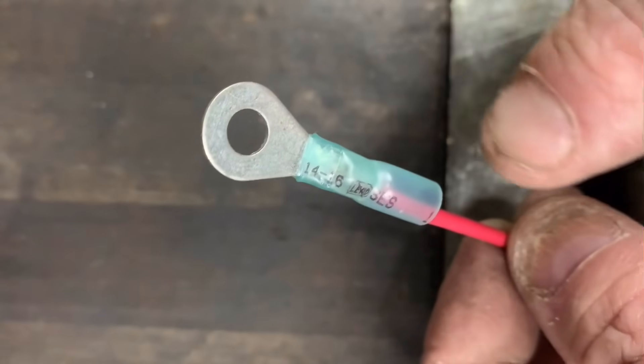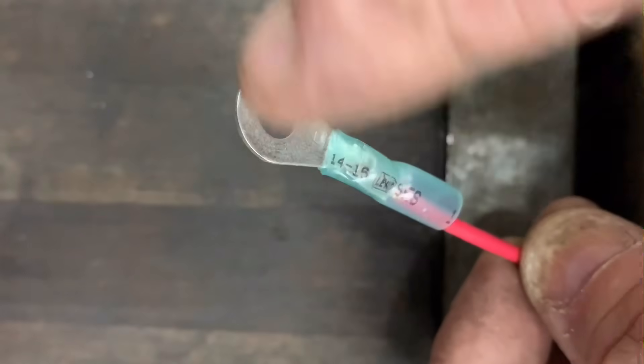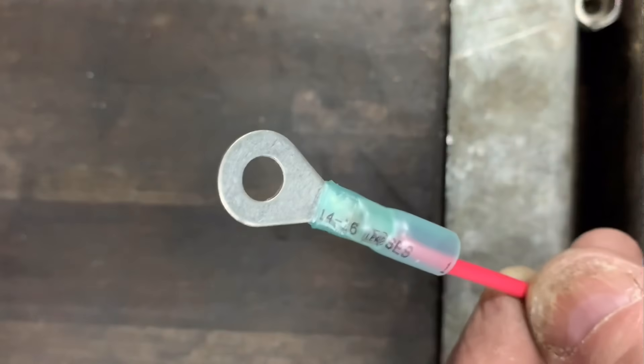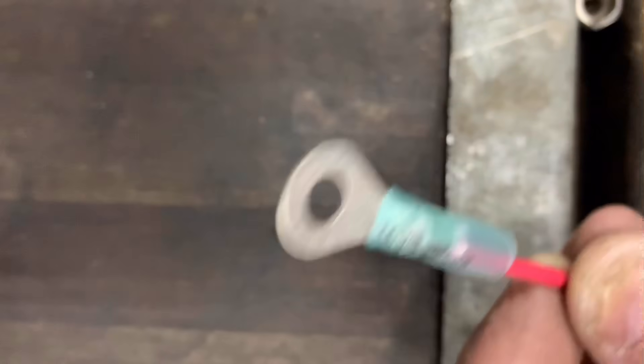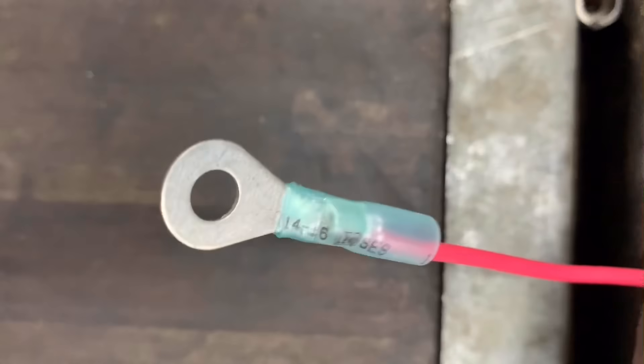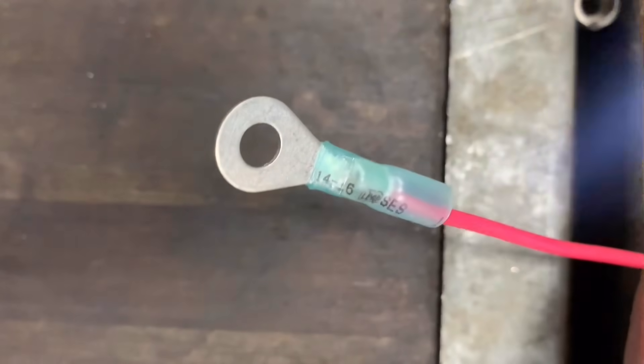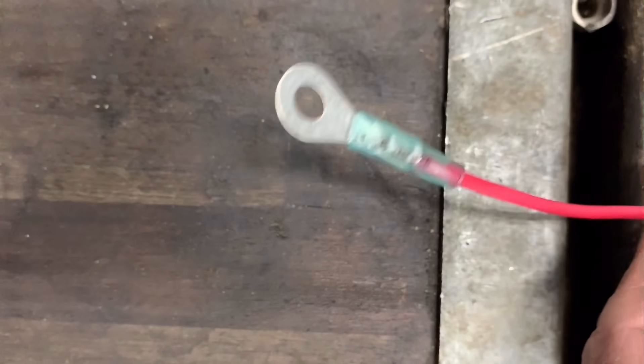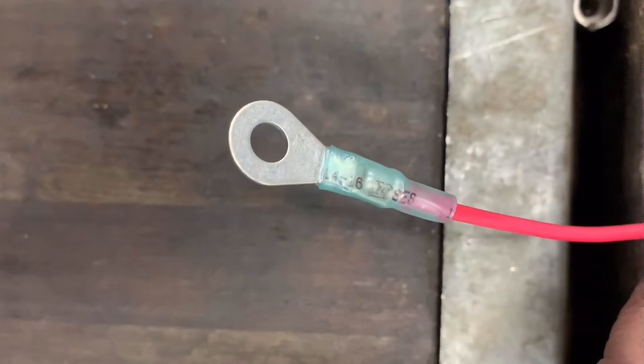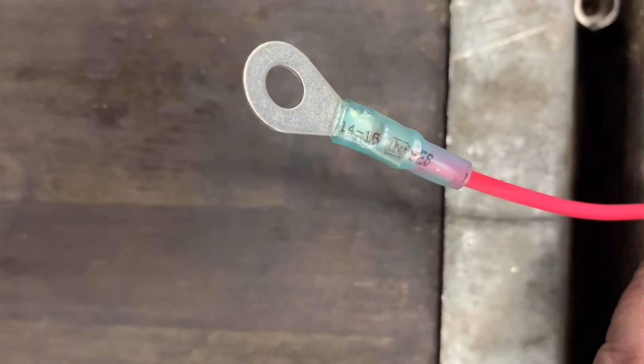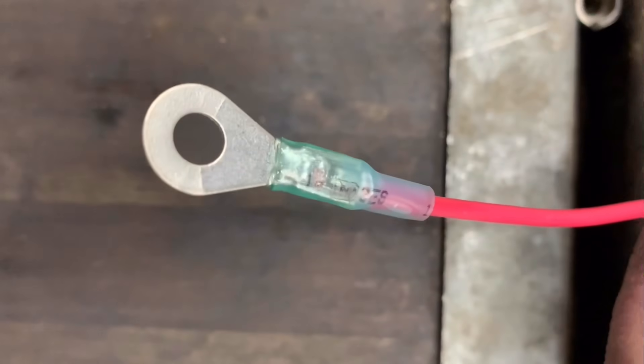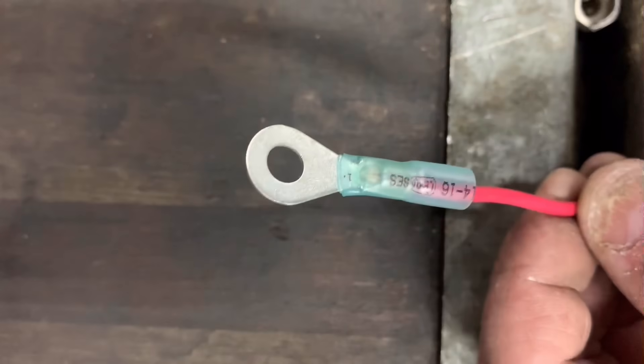Once you shrink the tubing, just concentrate your heat on the ring terminal here and that heat will flow down. You'll see this solder just go bloop. So let's give it a try. All righty, let's try it again.